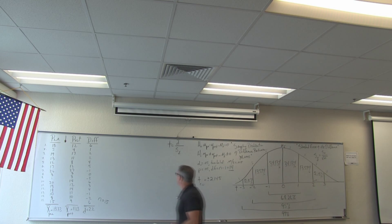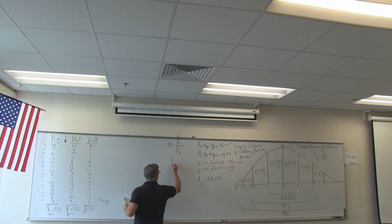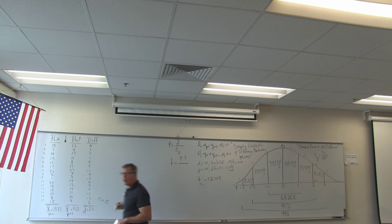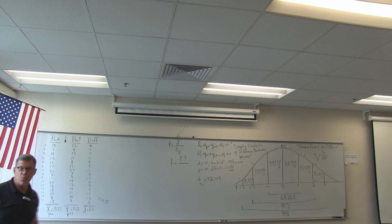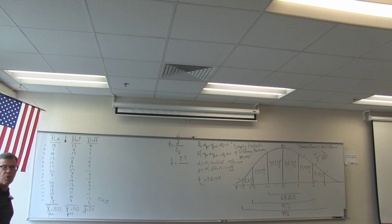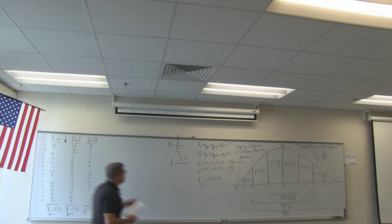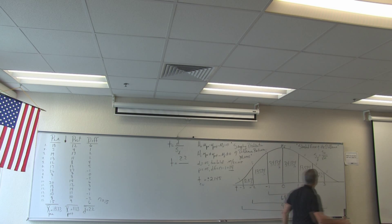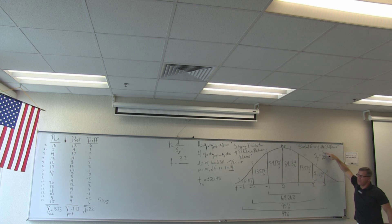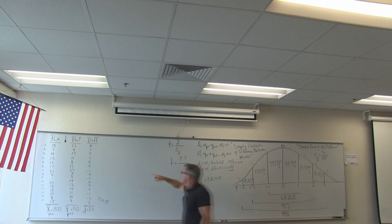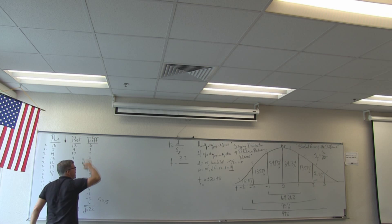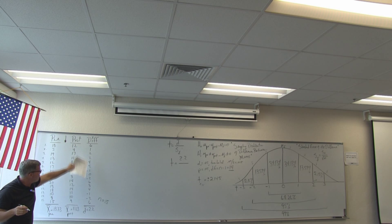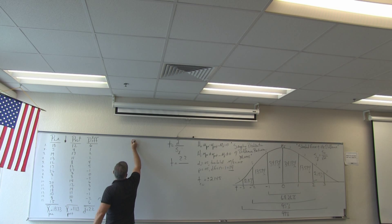Our mission is to compute t. We already have the numerator, d-bar, which in this case is 2.2 — a mean difference of 2.2 pounds. That's our dependent variable, and it's ratio data because we have a true zero point. Our next step is to compute the standard error of the difference — this denominator requires us to compute a standard deviation of the difference column of scores. We treat the difference column just like any x data set and compute the standard deviation, which is the square root of the variance. We use the computational formula for standard deviation, revisiting material from the second week of class.